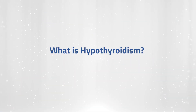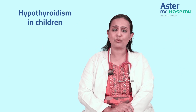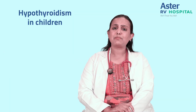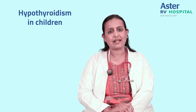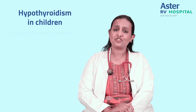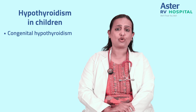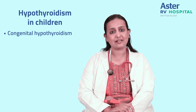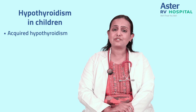Hypothyroidism is a condition where the thyroid gland makes very little amount of thyroid hormones. Sometimes children may be born either without or with some defect of the thyroid gland — in such a situation it is referred to as congenital hypothyroidism. However, if a child has a normal thyroid gland but develops symptoms of hypothyroidism later in life, it is called acquired hypothyroidism.